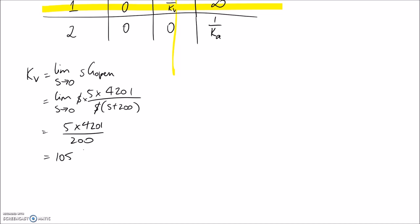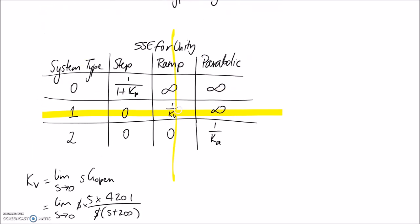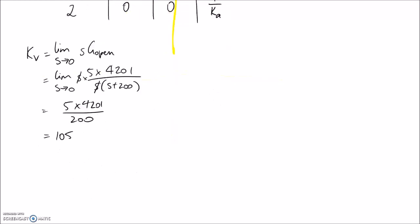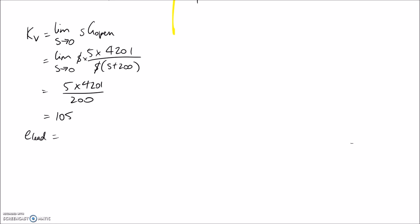KV is the error constant, not the error itself. For a unity ramp input, the steady state error is 1 divided by KV. I'll call this e_lead, which comes out to about 0.0095. The target — e_lead_lag — was 0.001. Since 0.0095 is larger than 0.001, the required improvement must come from the lag part of our controller.